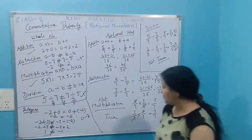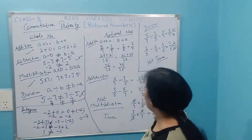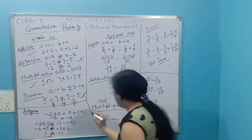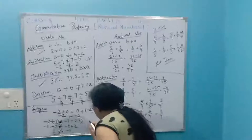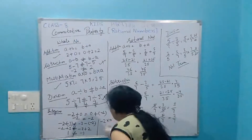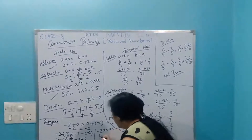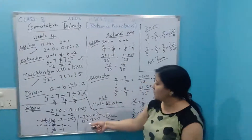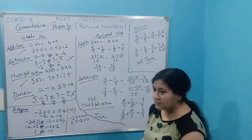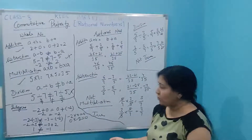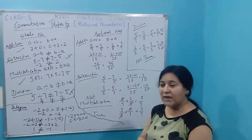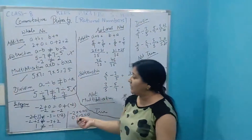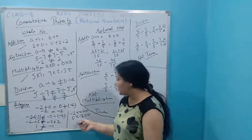Now for multiplication of integers: take minus two and zero. Minus two into zero is zero, and zero multiplied by minus two is also zero. Both are equal. You can try other numbers too: minus two multiplied by minus three is six, and minus three multiplied by minus two is also six. So under multiplication for integers, commutative property is also true.